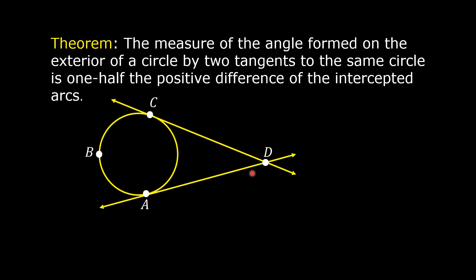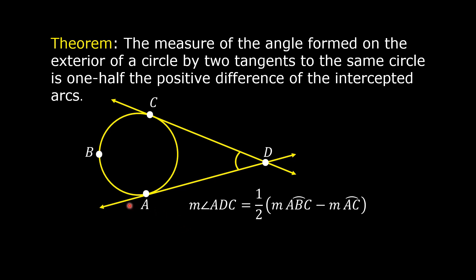The intercepted arcs are arc ABC and arc AC. According to the theorem, the measure of angle ADC is equal to one-half times the quantity measure of arc ABC minus measure of arc AC. We subtracted the measure of arc AC from the measure of arc ABC to get a positive difference. Arc ABC is the larger arc and arc AC is the smaller arc.